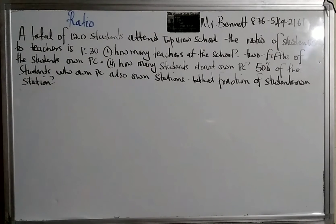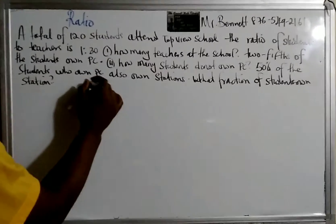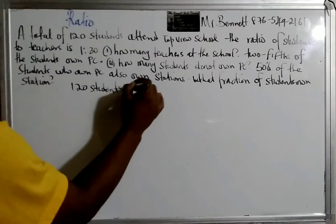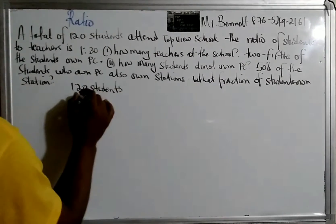So let us do it step by step. We have a total of 120 students and the ratio of students to teachers is 1 to 30.